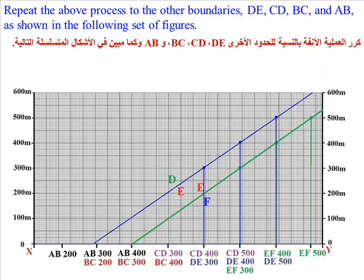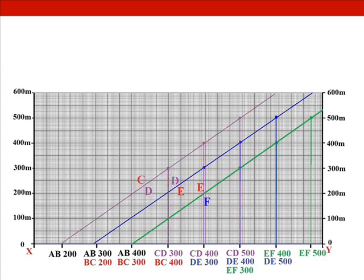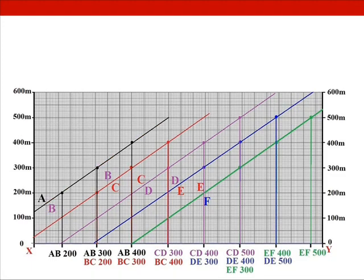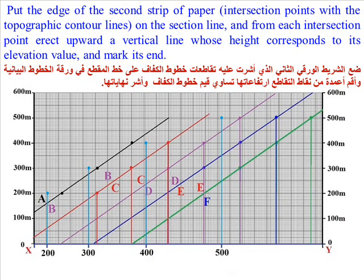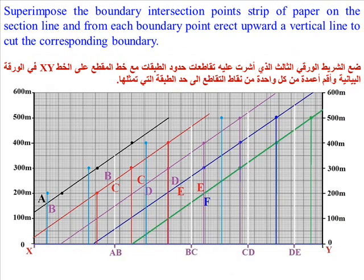Repeat the above process for the other boundaries DE, CD, BC, and AB, as shown in the following set of figures. Put the edge of the second strip of paper on the section line, and from each intersection point erect upward a vertical line whose height corresponds to its elevation value and mark its end. Superimpose the boundary intersection point strip of paper on the section line, and from each boundary point erect upward a vertical line to cut the corresponding boundary.